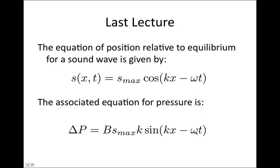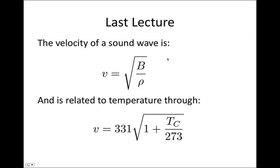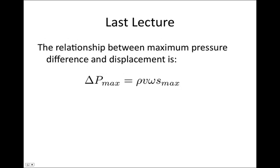When one is zero, the other is a maximum or a minimum, and vice versa. We derived the expression for the velocity of sound in different mediums: velocity of sound equals the square root of the bulk modulus over the density. It's related to temperature through the equation: velocity equals 331 times the square root of 1 plus the temperature in degrees Celsius over 273. We also showed that the relationship between maximum pressure difference and displacement is: ΔP equals ρ, the density, times v, the velocity, times ω, which is 2πf, times s_max.